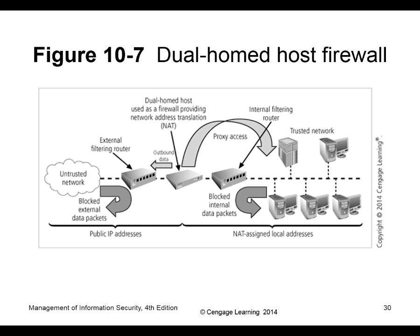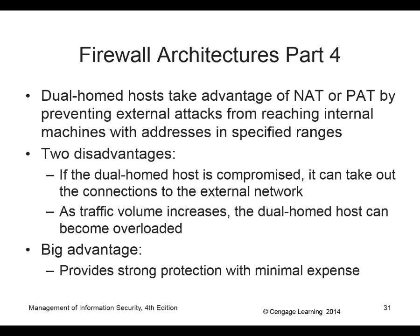A dual home firewall has two network cards — one on the outside, one on the inside. The advantage of NAT or PAT is preventing external attacks from reaching internal machines with addresses in specific ranges. That specific port went to a specific machine on the inside, not every machine. Disadvantage: if a dual home host is compromised, it can take out the connections to external traffic — think of a router at your house. If that thing gets compromised or killed, you're done.